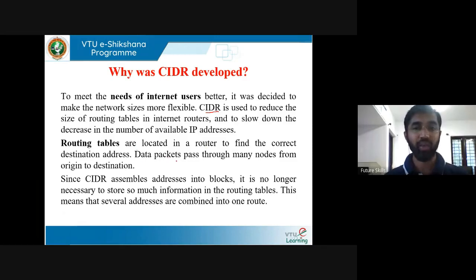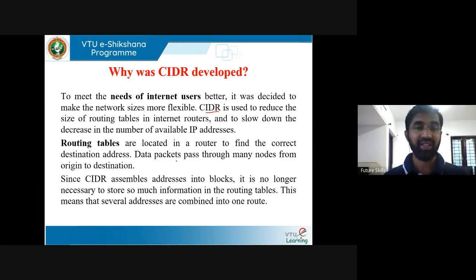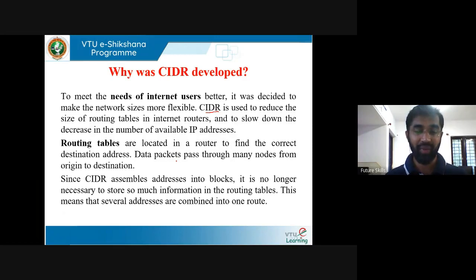Data packets pass through many nodes from origin to destination. Since CIDR assembles addresses into blocks, it is no longer necessary to store so much information in the routing tables — several addresses are combined into one route. CIDR stands for Classless Inter-Domain Routing. There are no classes; because of classful addressing, many addresses were wasted. CIDR notation assembles addresses into blocks.